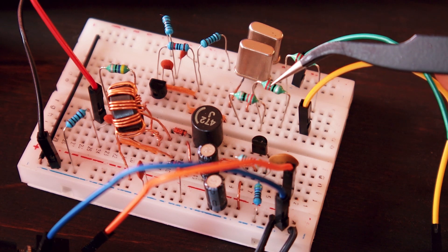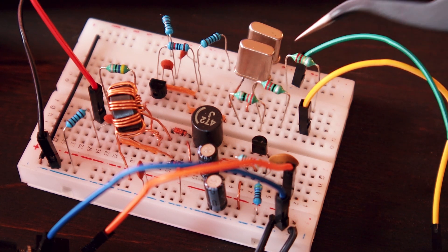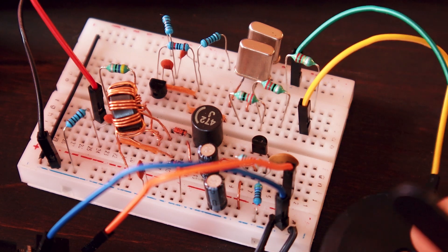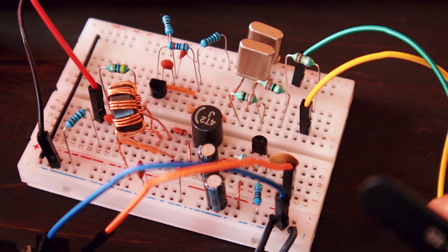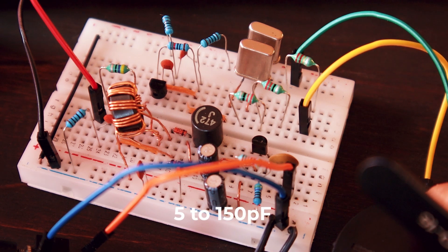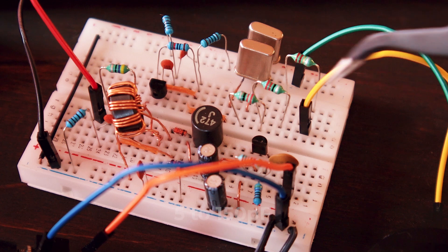These two are both 22 microhenry and the third one is 2.2 microhenry. And with these values and the value of the variable capacitor - which by the way I forgot what capacity this one has but I put it on the screen so you can see - so yeah, with this simple VXO I managed to cover the entire CW portion of the 40 meters band.